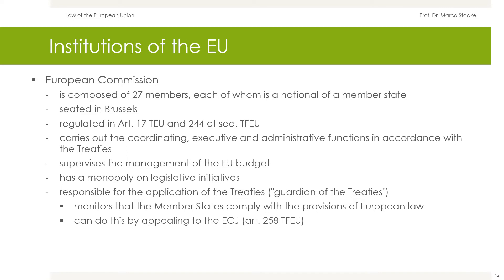The European Commission represents and defends the interests of Europe as a whole. It prepares proposals for new legislation, is responsible for the application of the treaties — that is why it is called the guardian of the treaties — and carries out coordinating, executive, and administrative functions in accordance with the treaties. It also supervises the management of the EU budget. The Commission has its seat in Brussels; it is governed by Article 17 TEU and Articles 244 following TFEU. It also monitors that the member states comply with the provisions of European law.